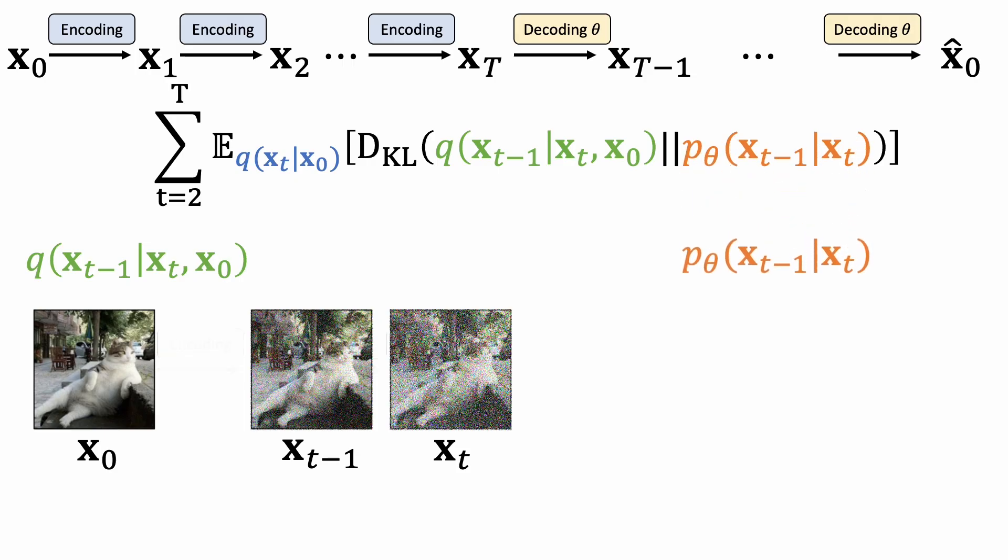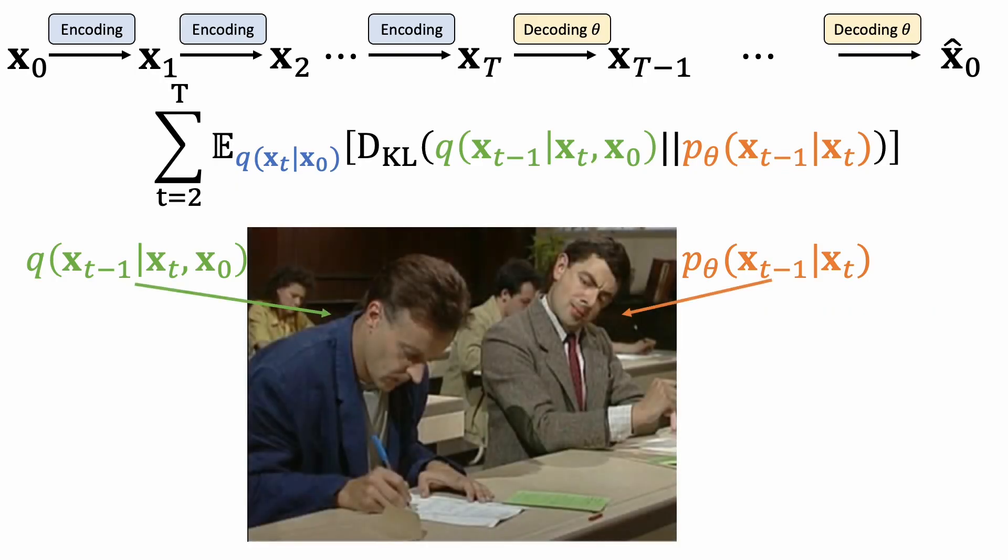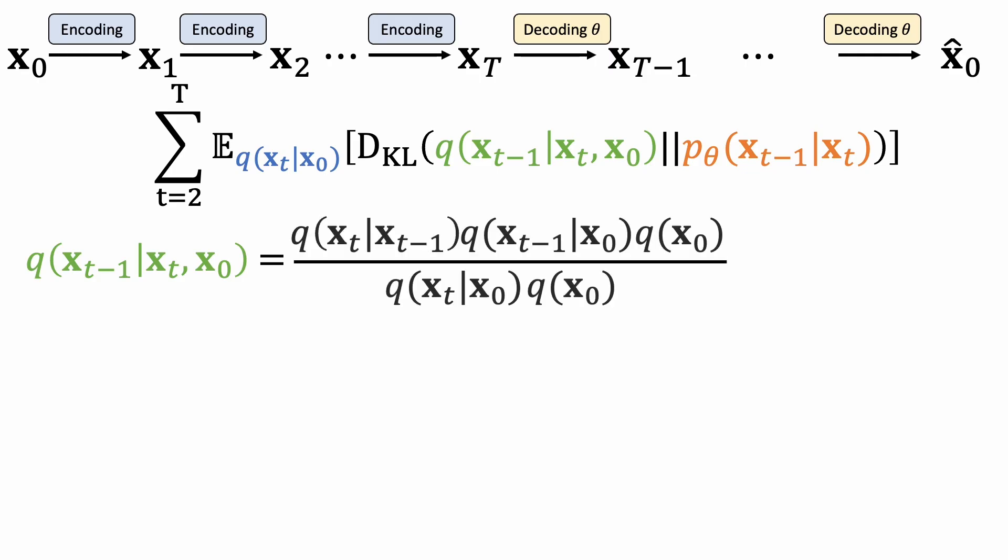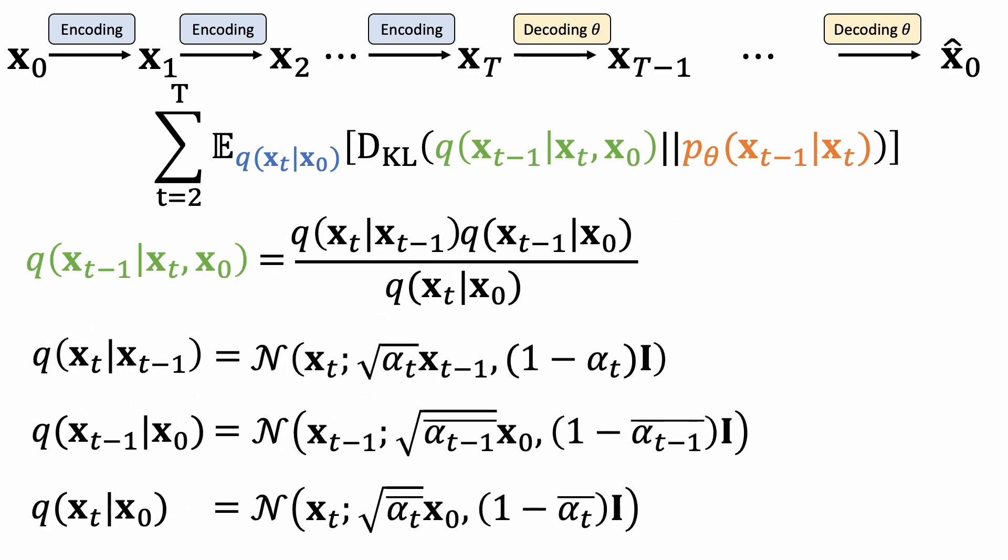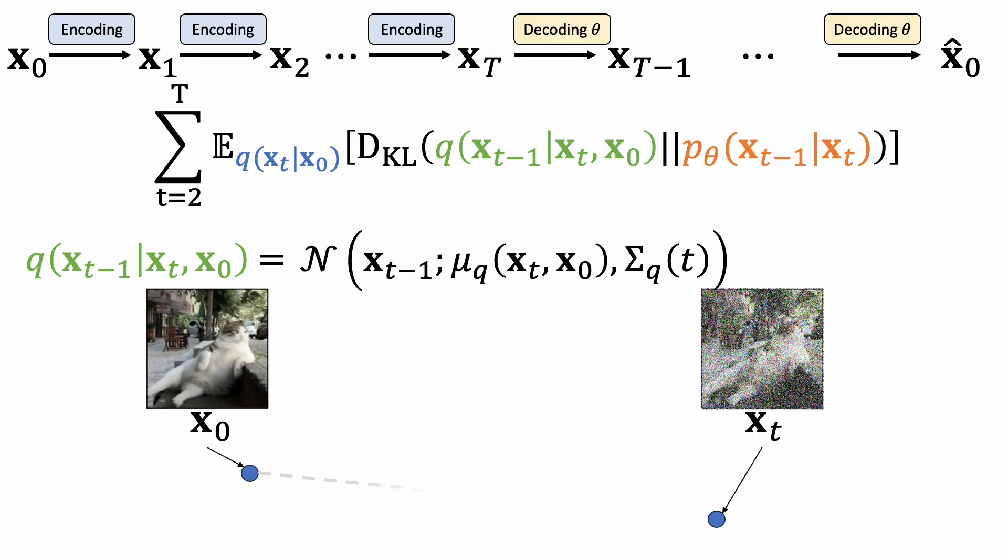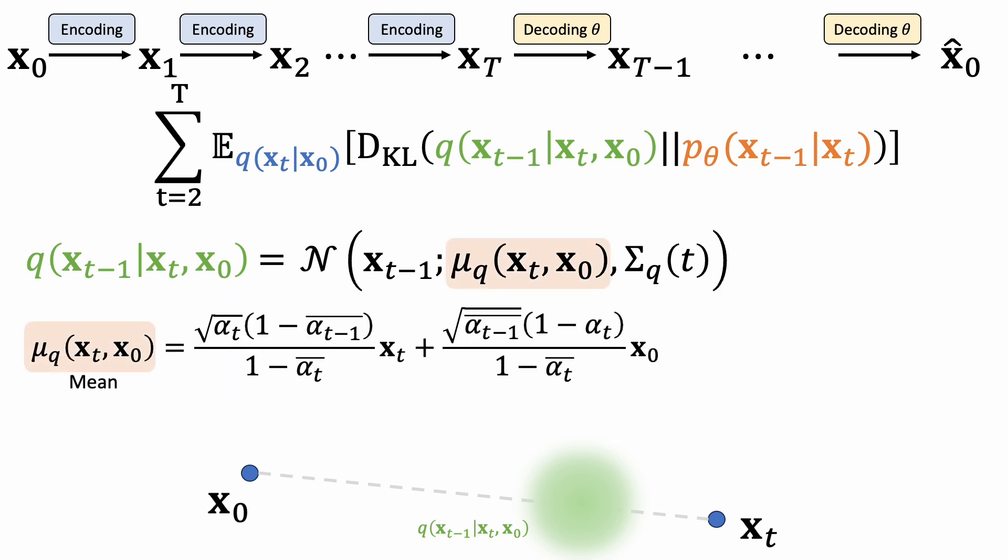This tells us how to denoise a noisy image when knowing the ground-truth clean image x0. We use this to guide our denoising network that models the probability of a less noisy image xt-1 given a noisy image xt. Here is an actual photo of what's happening when training a diffusion model. To derive this term, we apply the definition of conditional probability and Bayes rule. Here we know exactly what these three probabilities are. After some calculation, we find that it is also a Gaussian distribution. The mean lies on the line between the noisy image xt and the clean image x0. We can also compute the variance in closed form.